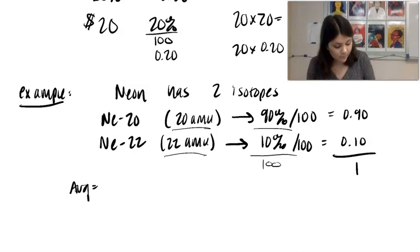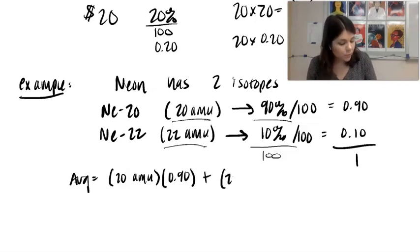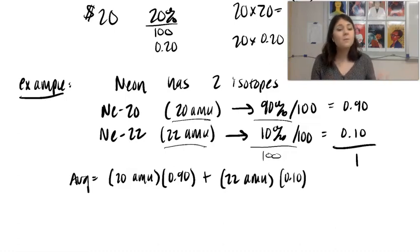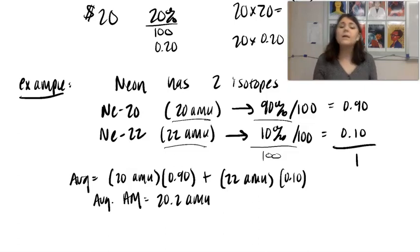So here, I'm going to take 20 AMU multiplied by its relative abundance plus 22 AMU multiplied by 0.10. Put that in your calculator. You should get that the average atomic mass ends up being 20.2 AMU.